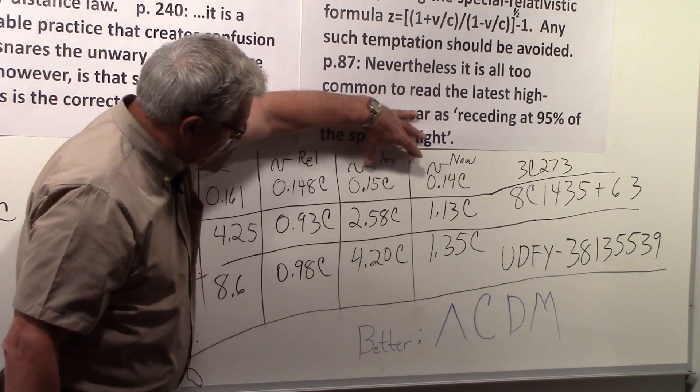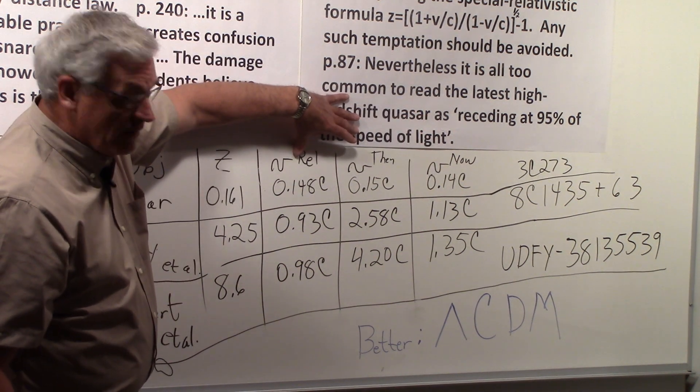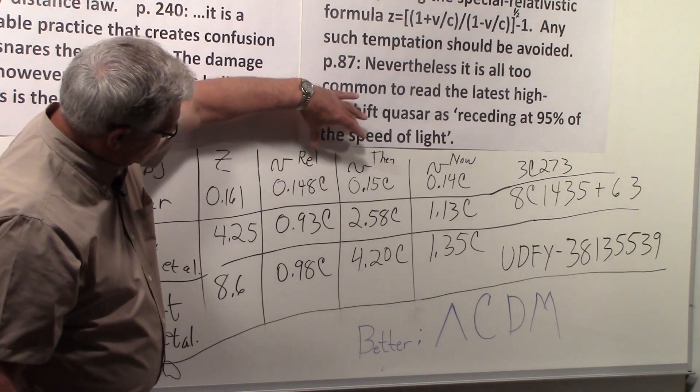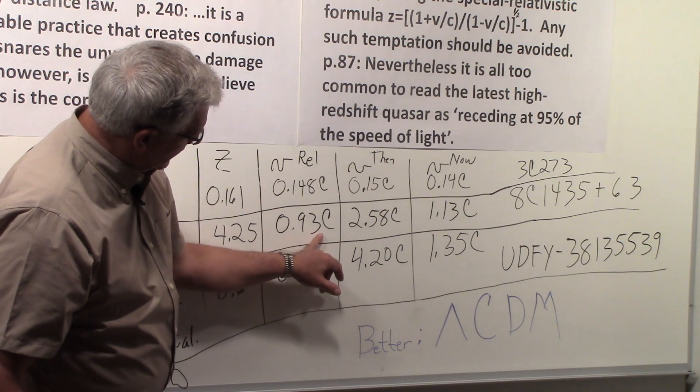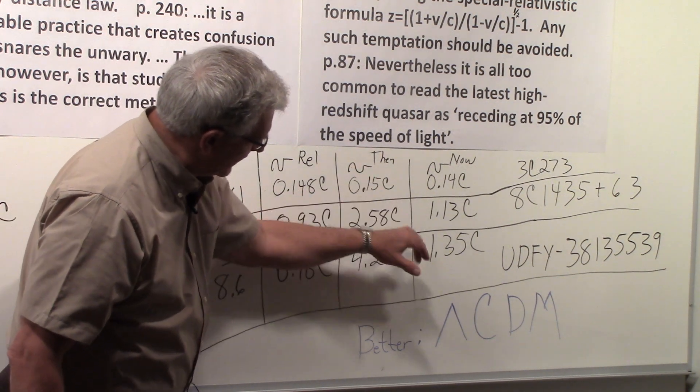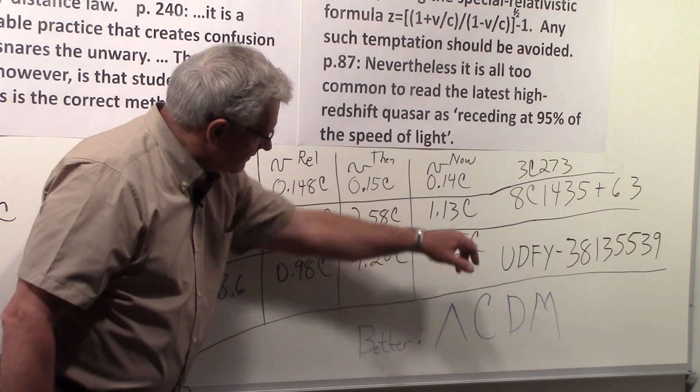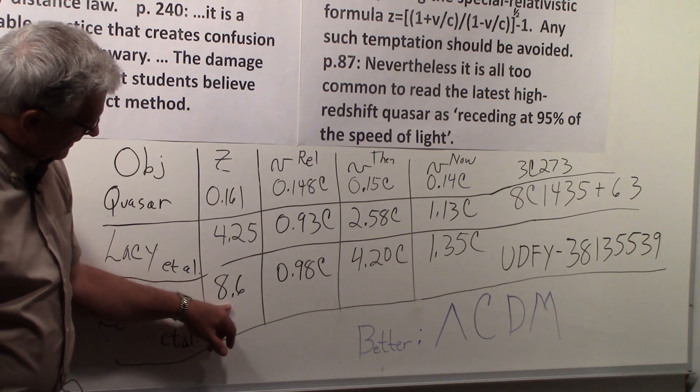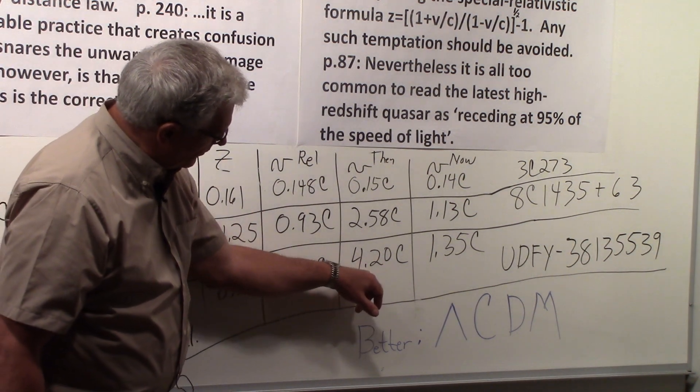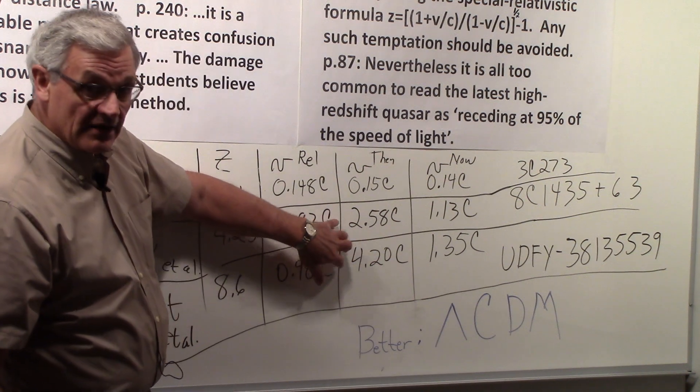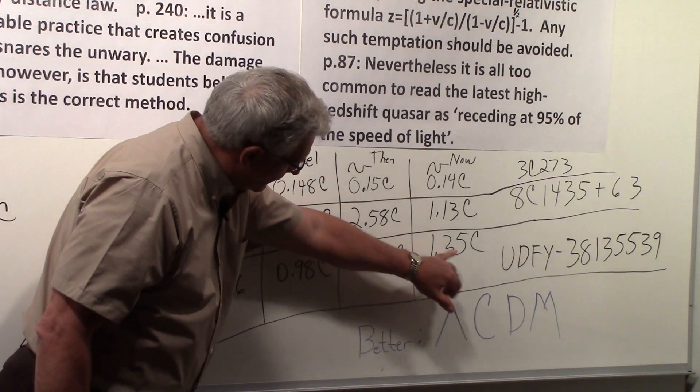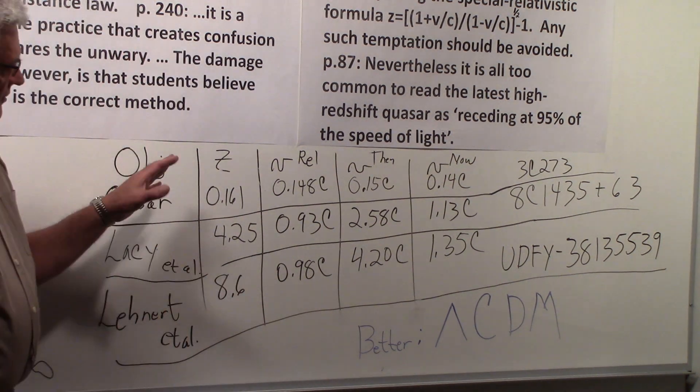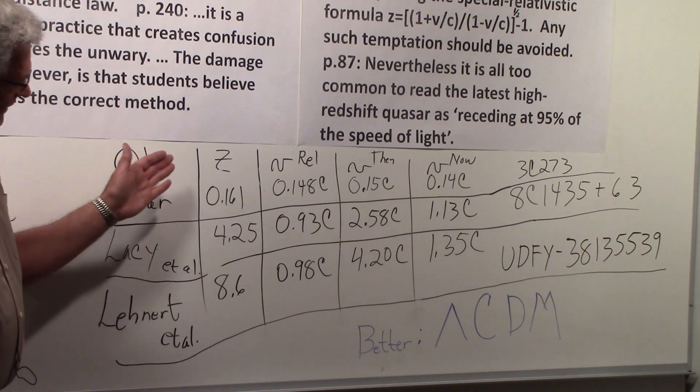For the 'then' and 'now' with the relativistic Doppler formula, but as z increases, you can see the agreement goes away. We get 0.93c here, 2.58c here for the 'then,' and 1.3c for the condition 'now.' And for the large shift of 8.6, we get 0.98c, 4.2c—so it's actually traveling faster than the speed of light—and we get 1.35c here.